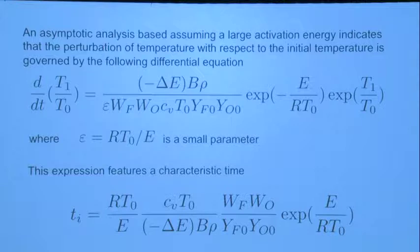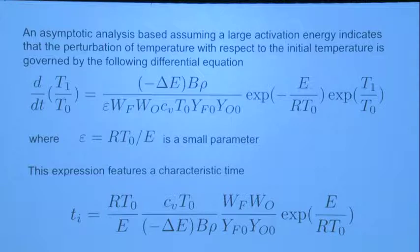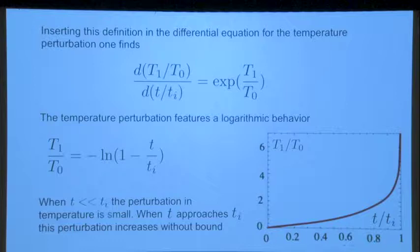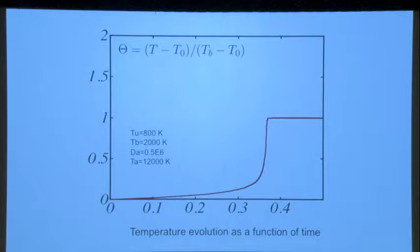This asymptotic theory provides a very nice explanation for the runaway phenomenon — ignition. When you integrate the full equation, this is how it looks: you have the ignition time, then you reach the final burning temperature. The temperature of the burned gases is here — a runaway and then arrival at that point.